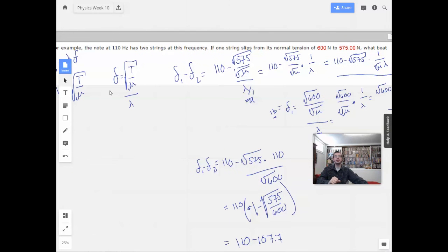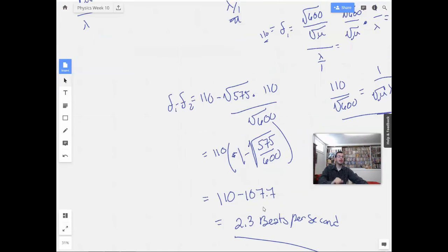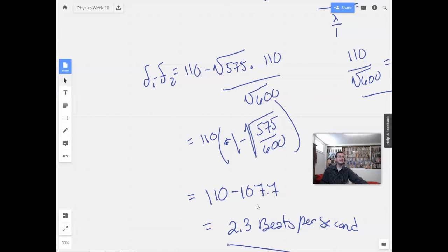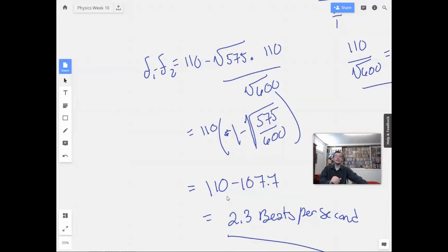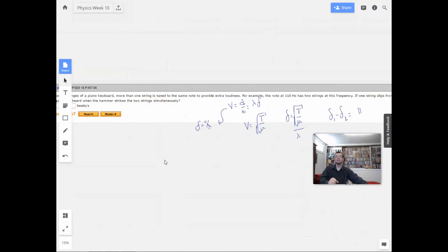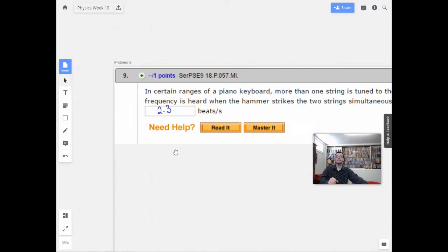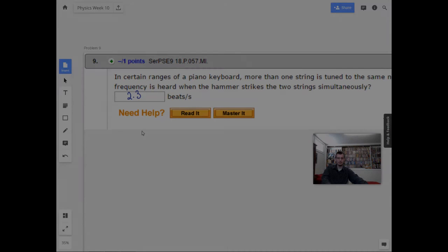And we just did the math out. And we got an answer for the frequency that was slightly less. So as the string slipped, the frequency lowered slightly, which makes sense. And then we found the difference between the two, and that gave us the beats per second that we were looking for. Alright, that's not too bad. On to problem 10.